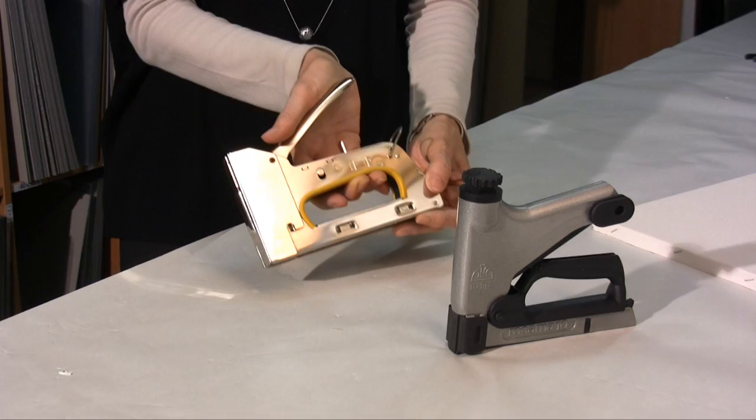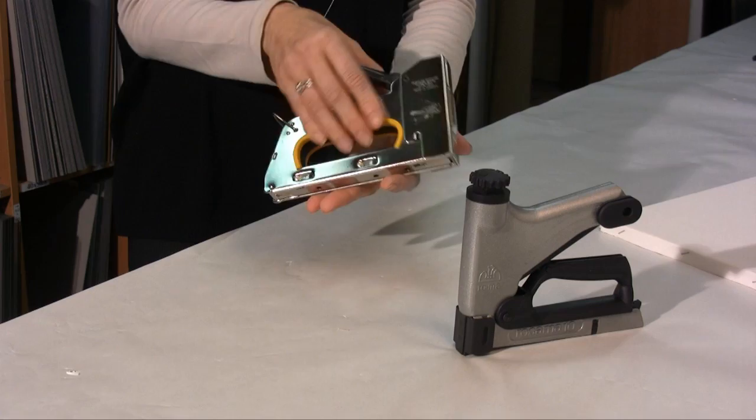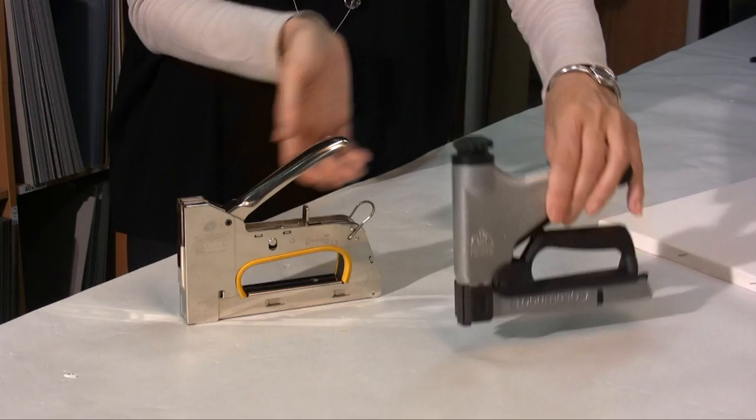There exist two alternatives also for the manual gun. In the video, you saw the Rapid 33 stapler. Rinaldin, however, provides as an alternative, the stapler Rokama 110.